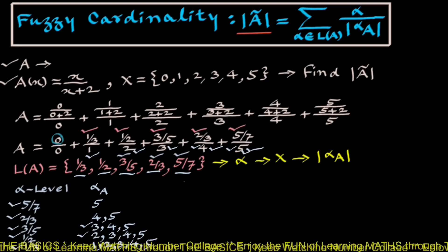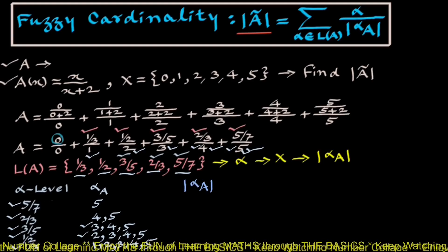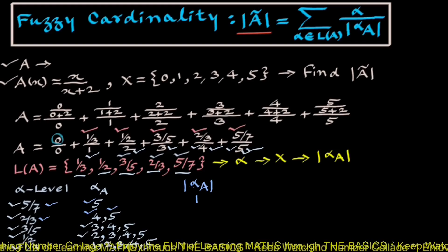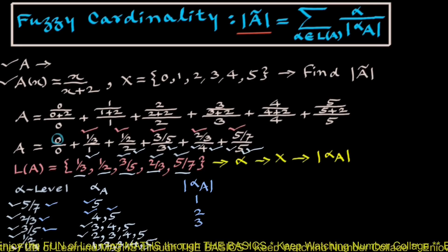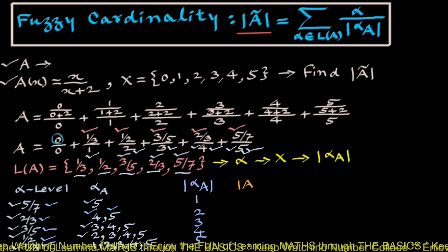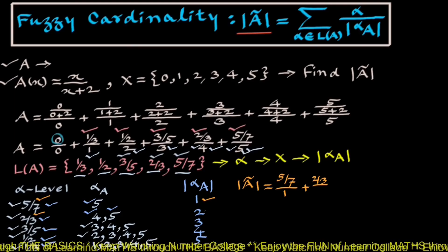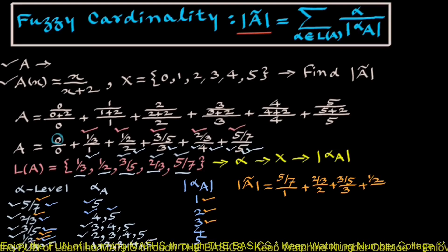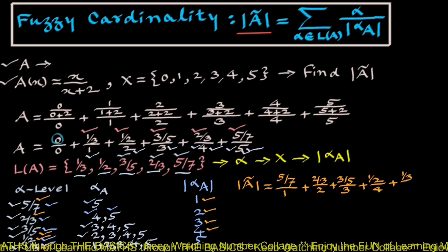In the third column, scalar cardinality of alpha cut A: corresponding to alpha = 5/7 there is 1 element; for alpha = 2/3, there are 2 elements; for 3/5, 3 elements; for 1/2, 4 elements; and for 1/3, 5 elements. So fuzzy cardinality of A equals: 5/7 upon 1 + 2/3 upon 2 + 3/5 upon 3 + 1/2 upon 4 + 1/3 upon 5.